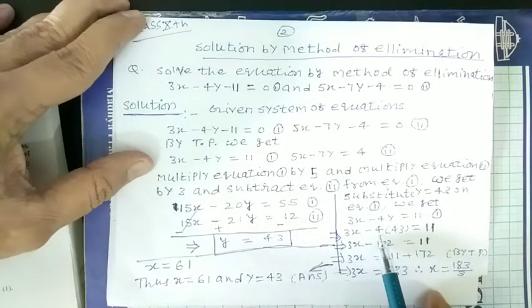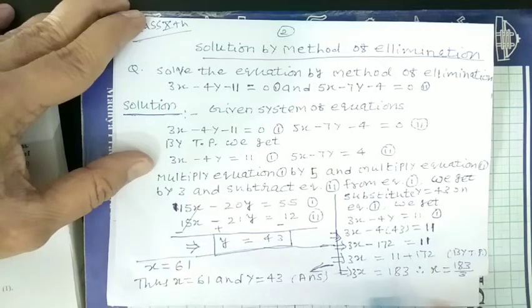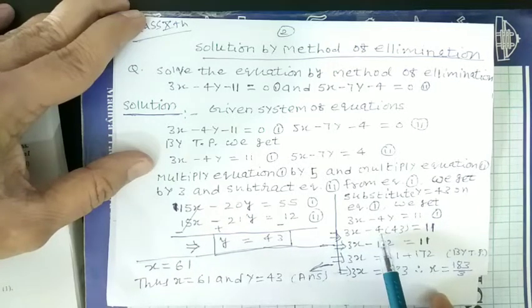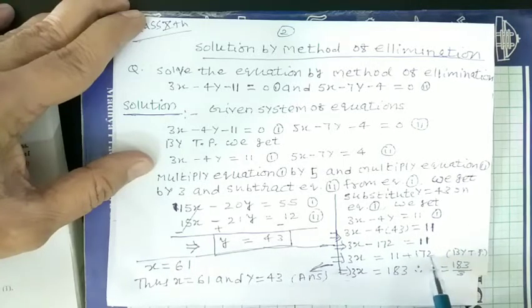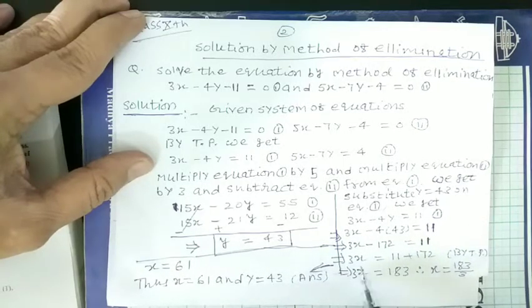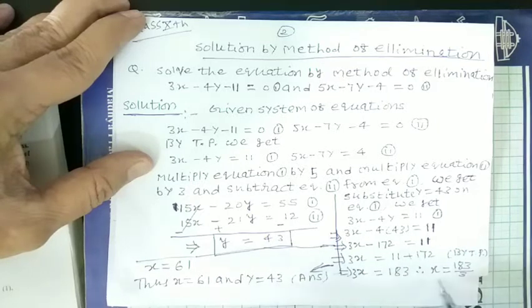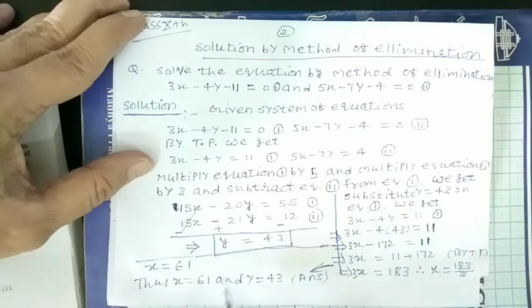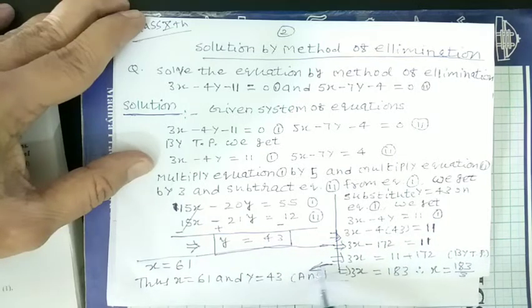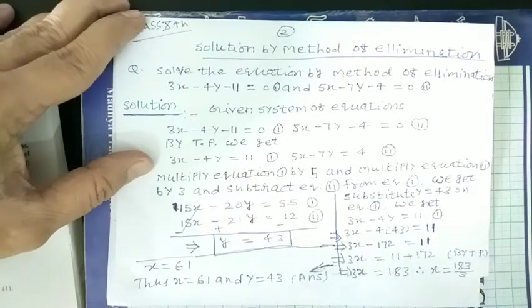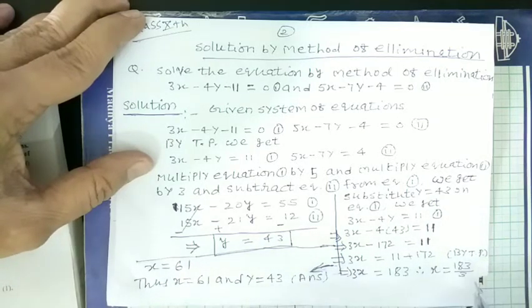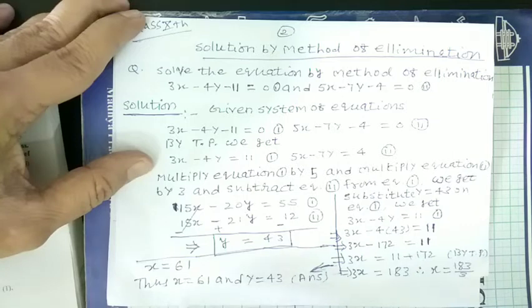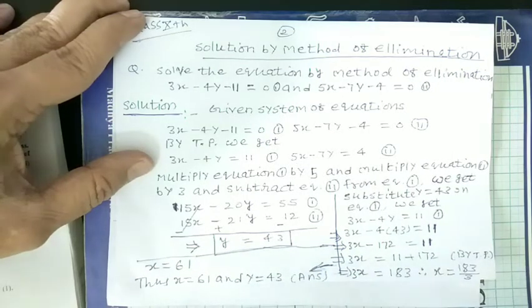3x minus 4 into the value of y, 43, is equal to 11. 3x minus 43 multiplied by 4, we get 172, is equal to 11. By transposition, we get 3x is equal to 183. Therefore, x is equal to 183 upon 3. Thus, x is equal to 61 and y is equal to 43. Answer.